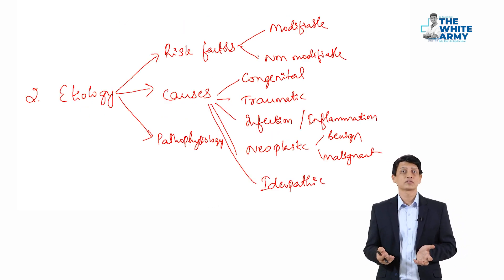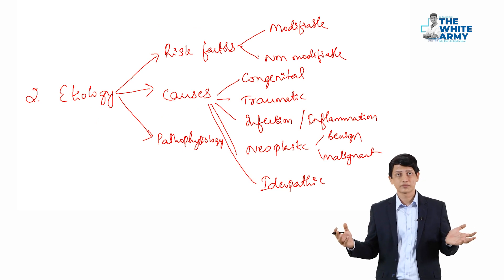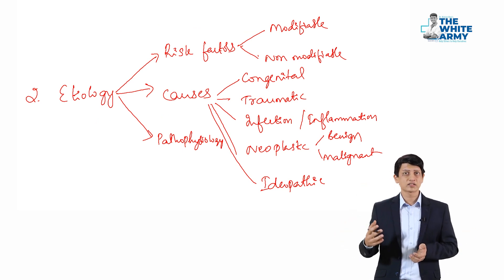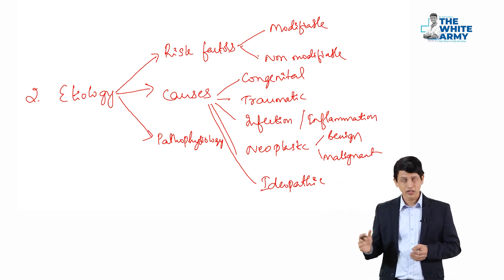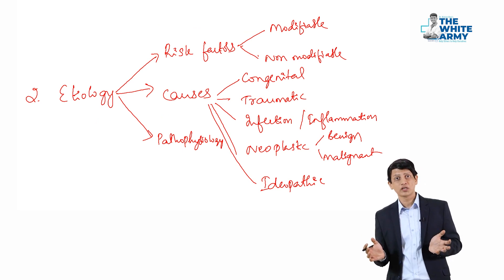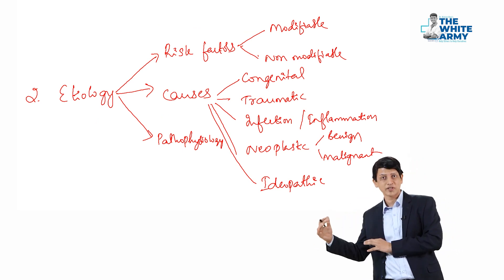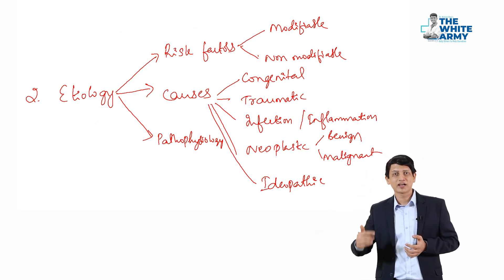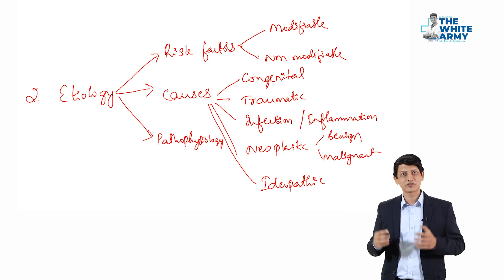Second, etiology. Risk factors. The question is lung cancer. What are the risk factors for lung cancers? You can write. And what are the causes for the same? And what is the pathophysiology? How does smoking cause COPD? You can write it in a nice 3-4 line flow chart manner. That would be very impressive.